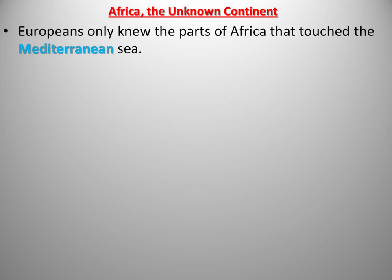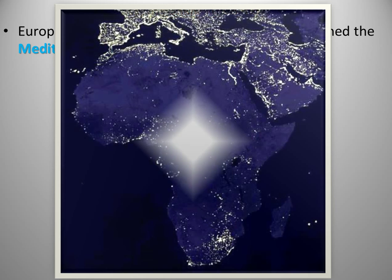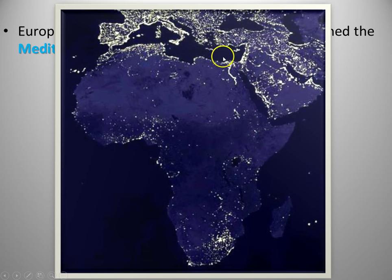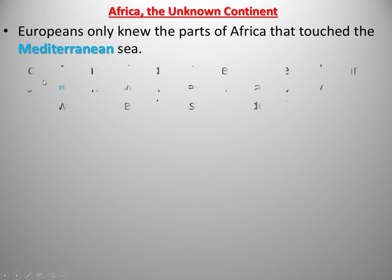Let's get our story started. Africa was known as the unknown continent. Europeans really only knew about the parts of Africa that touched the Mediterranean Sea, so their interaction with that part of the world was very minimal. As you can see, this is satellite imagery of life in Africa today. You can tell that Europe and the edges of Africa are really the only accessible areas, because this right here is the Sahara Desert and this is the Congo. These are the kingdoms around the edges of Africa, and what was successful in the north was connected to parts of the Mediterranean. North Africa did flourish because of the Muslims living there, but beyond that Africa was fairly unknown, mostly because of the Sahara Desert and the Congo.